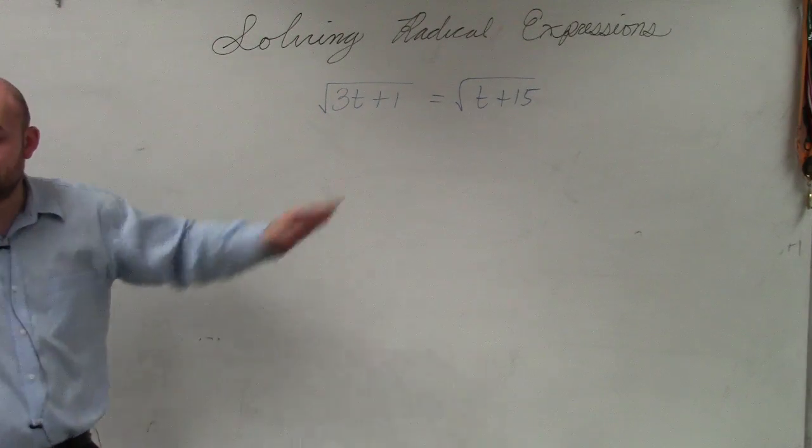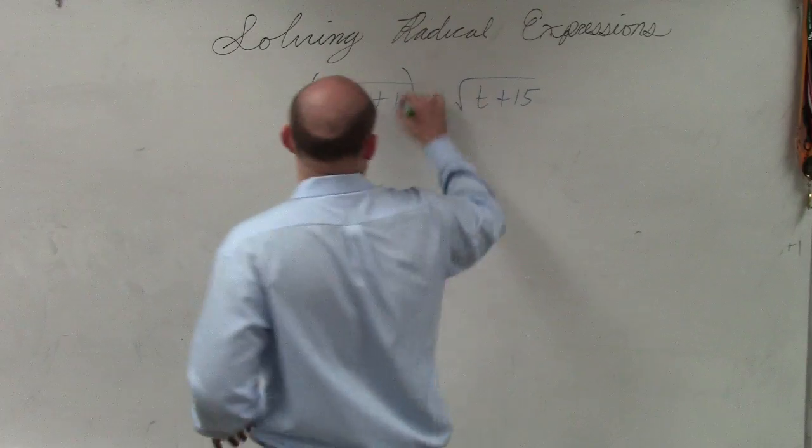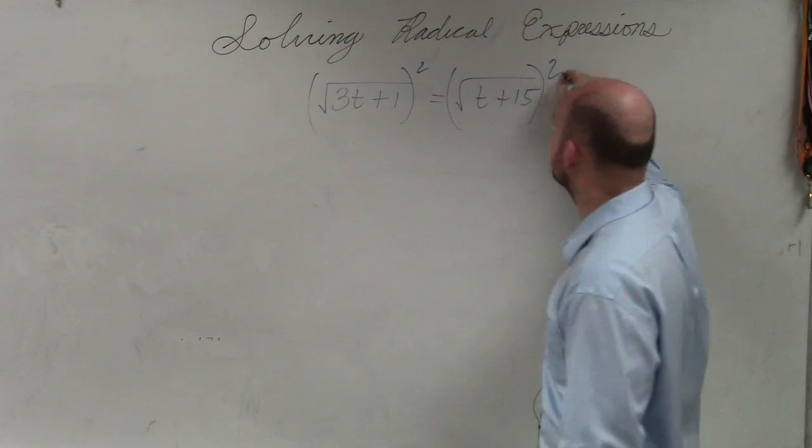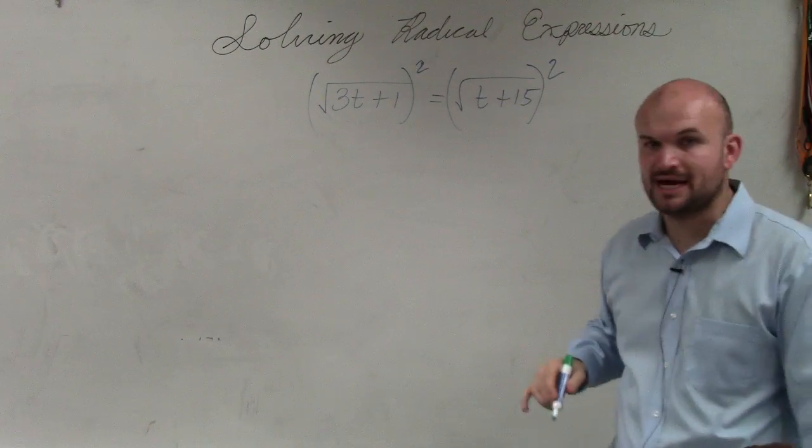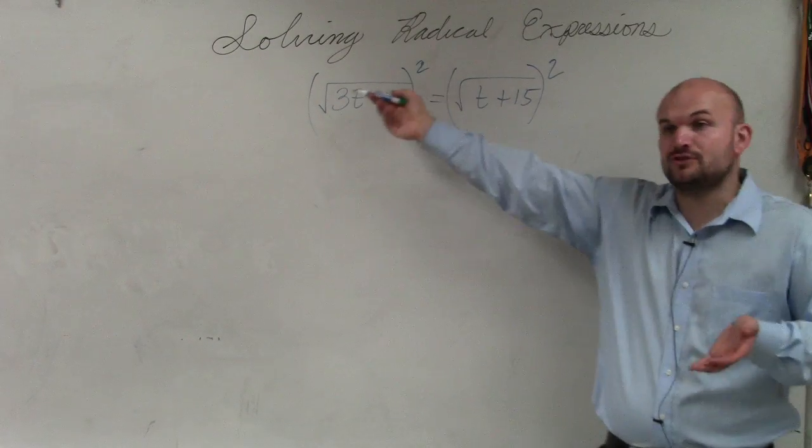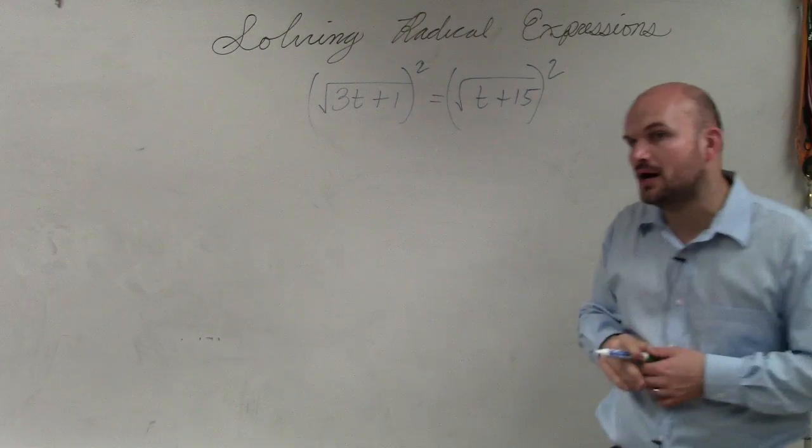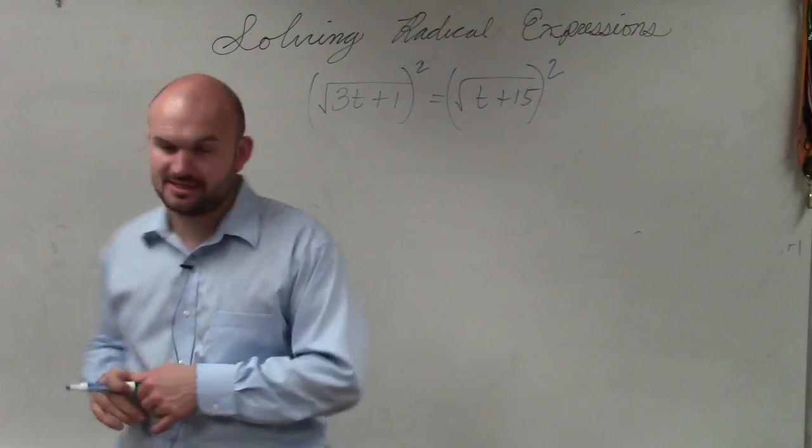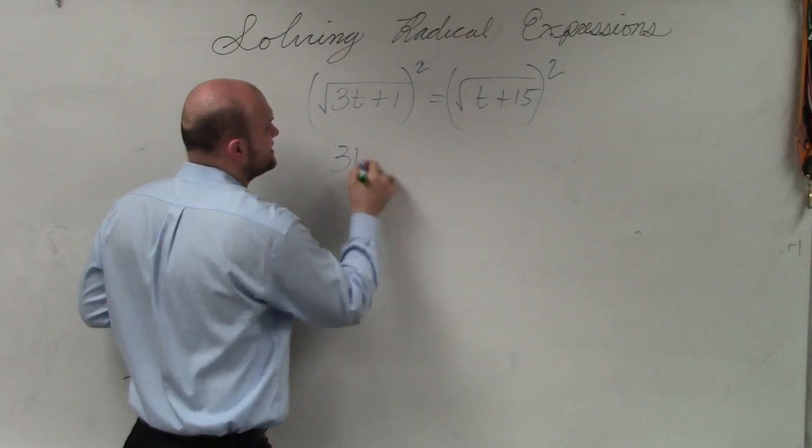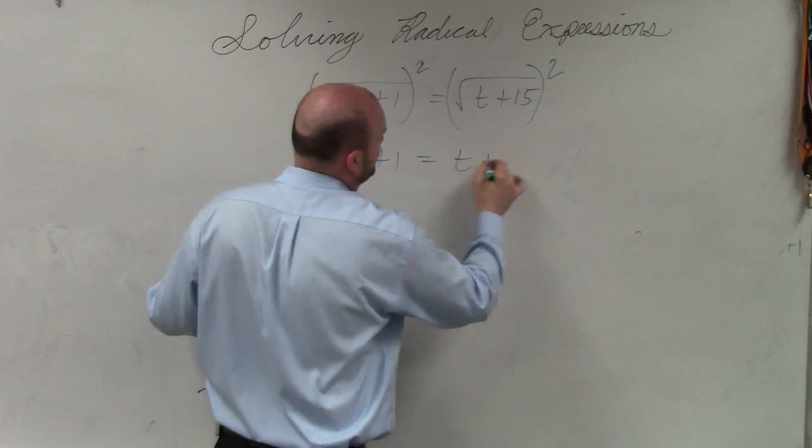To simplify this problem, all I simply need to do is undo the square root by squaring both sides. When you square the square root, those are going to divide out each other. So therefore, we have 3t plus 1 equals t plus 15.